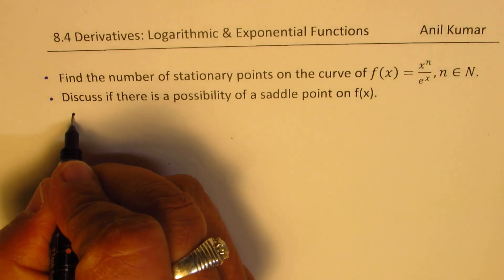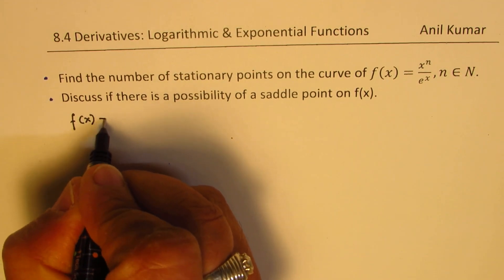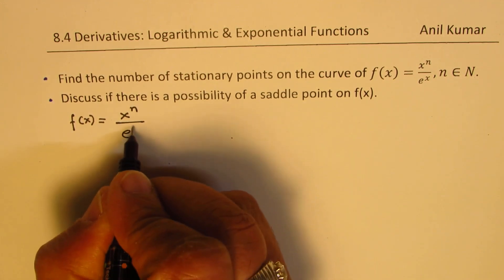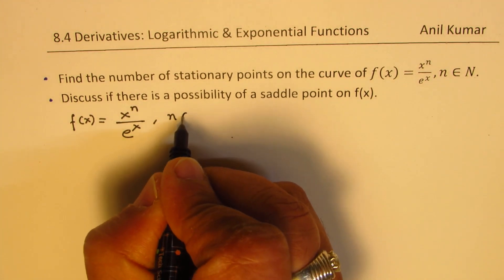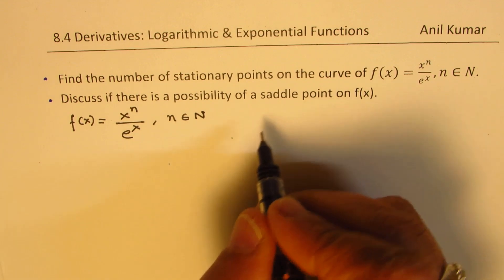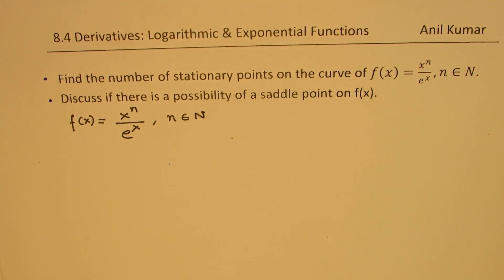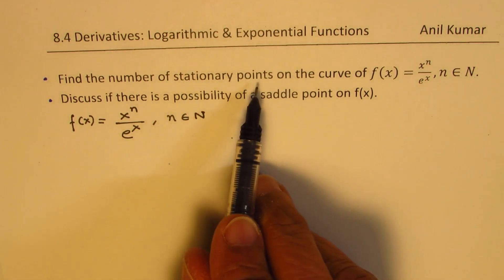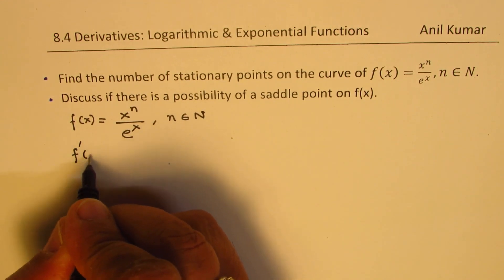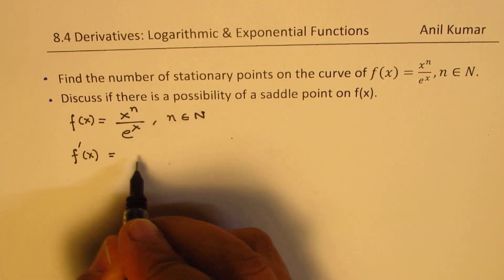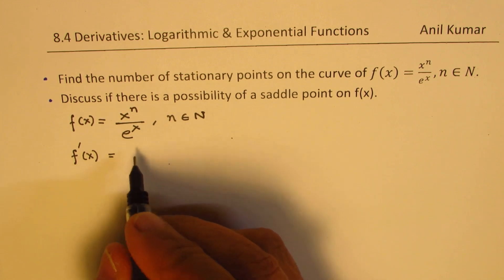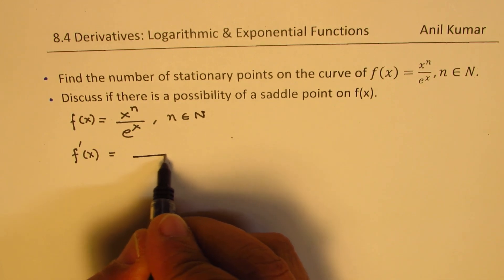We are given a function f(x) = xⁿ / eˣ, where n belongs to the set of natural numbers. Natural numbers means 1, 2, 3, 4, and so on. To discuss stationary points and saddle points, let us first find the derivative. The derivative of this function — you could use product rule or quotient rule, either can work — so let us use the quotient rule.